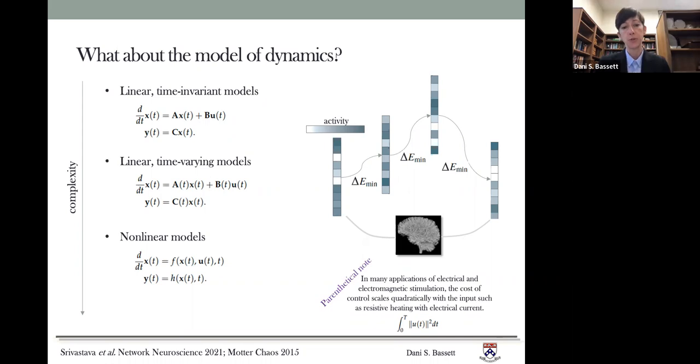We could also move to linear time varying models. So here you have the adjacency matrix also being a function of time. That's particularly useful when you're studying effective connectivity matrices, where you may have different estimates of effective connectivity as a task is being performed or as an individual is moving through different dynamical regimes, for example, during a seizure.